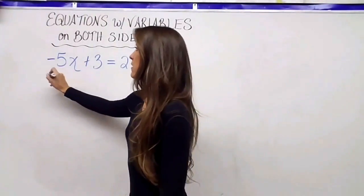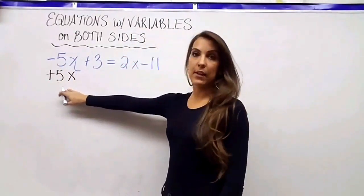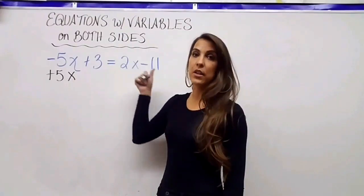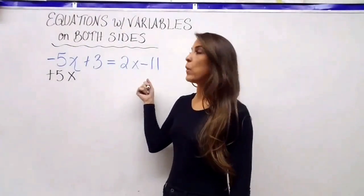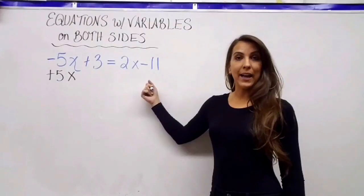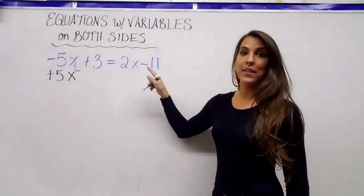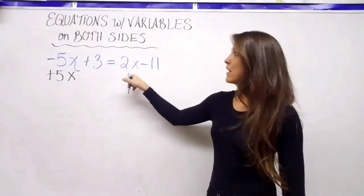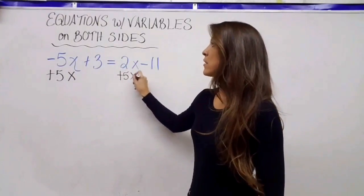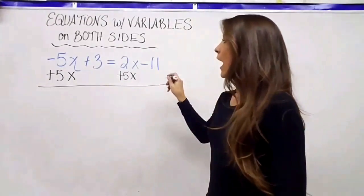So if we can avoid it, we should — and in this case we can avoid it by doing plus 5x instead of minus 2x. I'm going to add 5x to the left side of the equation and then add it to the right side as well. Remember, I can only add like terms, so the only like term of 5x on the right side is the 2x, so I'm adding 5x right there.